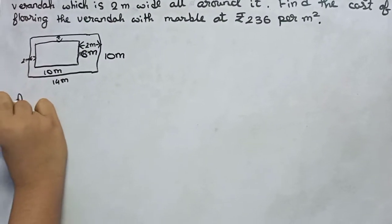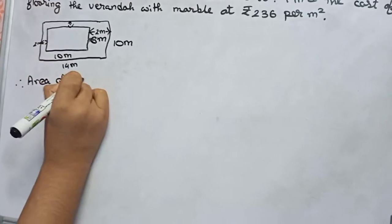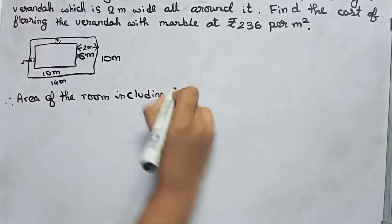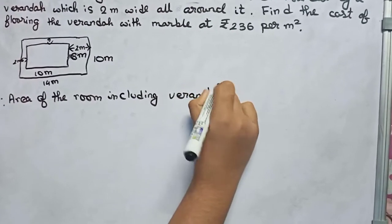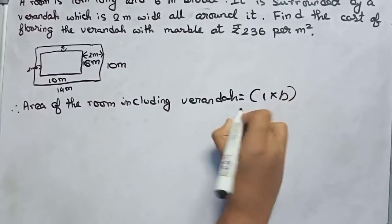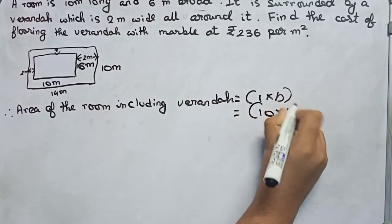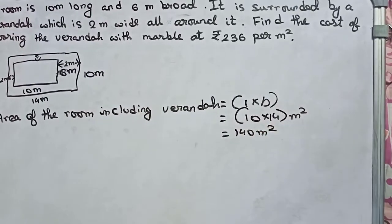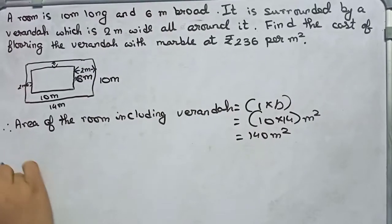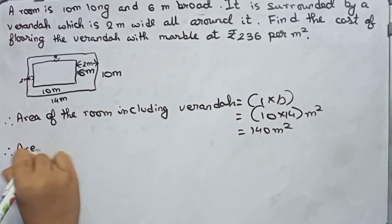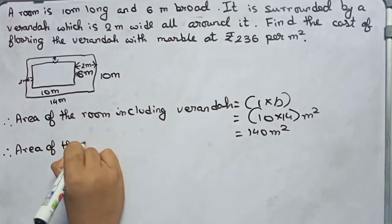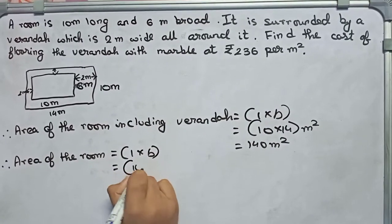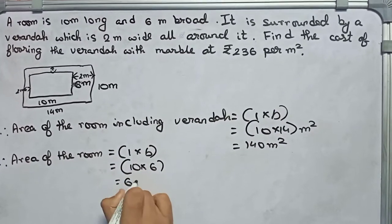Therefore, the area of the room including the veranda equals length into breadth, which is 14 into 10, giving 140 meter square. This is the total area including the veranda. Now we have to find only the area of the room, which equals length into breadth, that is 10 into 6, so it becomes 60 meter square.